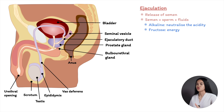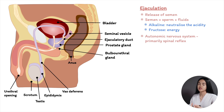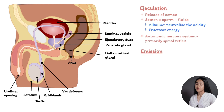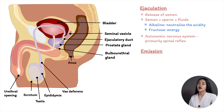Ejaculation is controlled by the autonomic nervous system, primarily a spinal reflex mediated by afferent pathways from mechanoreceptors of the penis. Ejaculation time varies among men; factors include arousal, penile sensitivity, and psychological hormones. Ejaculation consists of two phases — emission and expulsion — and the main organs involved are the epididymis, vas deferens, seminal vesicles, prostate, urethra, and bladder neck.